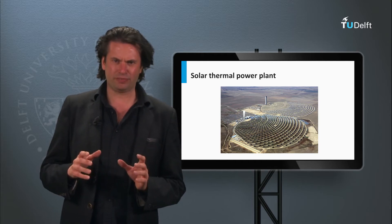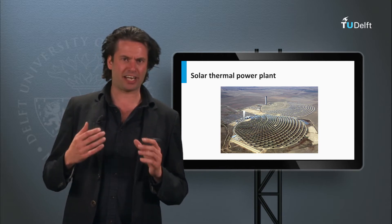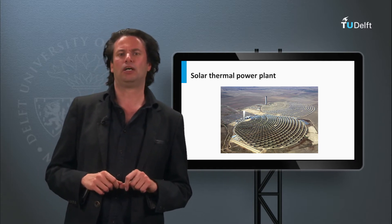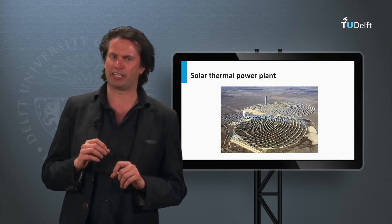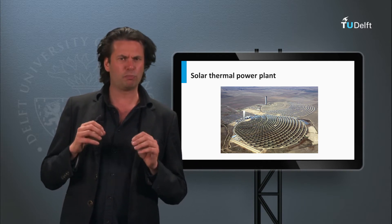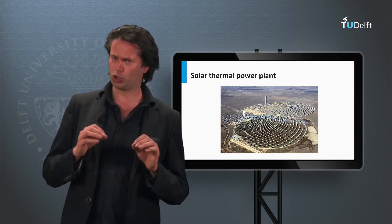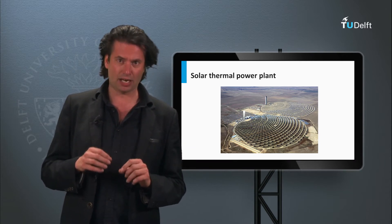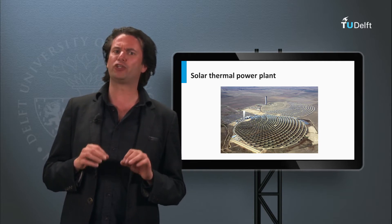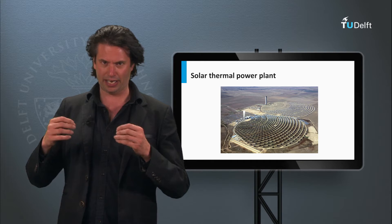In the previous section we talked about solar concentrators and their applications for high temperature solar water heating systems. But this is not the only application. High temperature fluids can be used in steam turbines to produce electricity. That is what happens in the so-called solar thermal power plants, like the one shown here. Solar thermal power refers to the conversion of solar to mechanical and electrical energy.